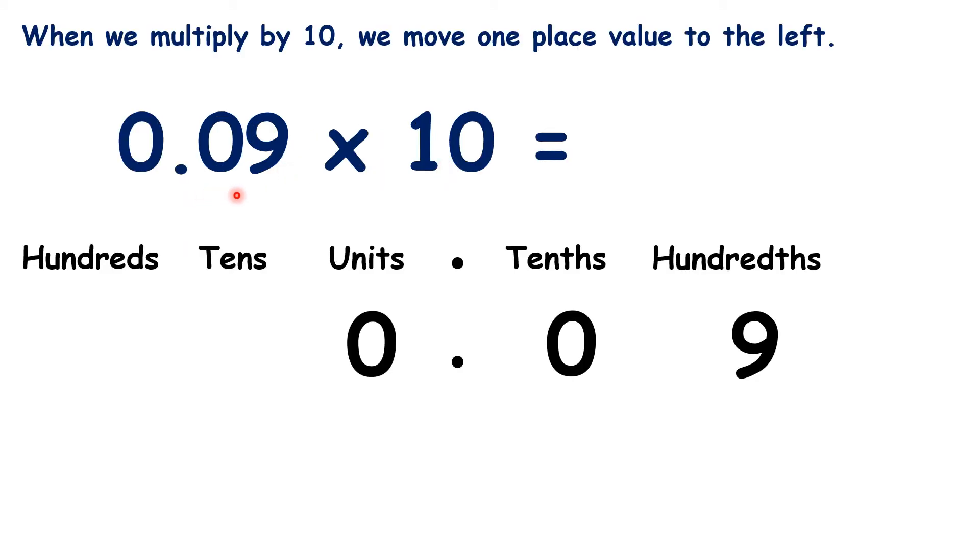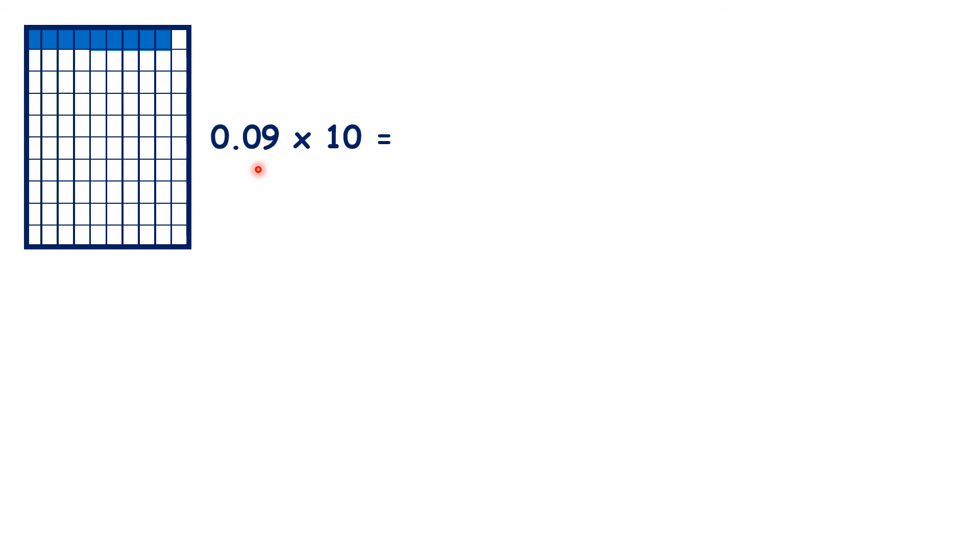What is 0.09 times 10? And we can show 0.09 times 10, because here we have 9 hundredths, 9 parts out of a hundred, colored.